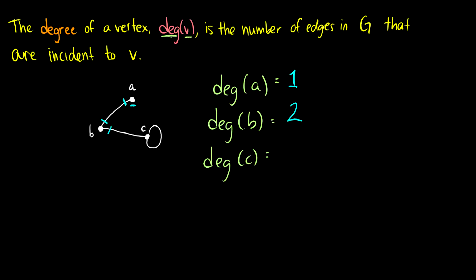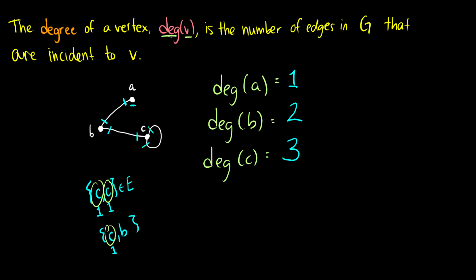What about c? We see that c has an edge going to b, so that's one. But what do we do when it loops? When it loops we have c leaving and c entering again, so we have two points that it goes through. If we take a look at this pair as cc, its degree gets one for the start point and one for the end point. So the degree of c is actually three because it has one going from c to b, and c appears in an edge here, here, and here.